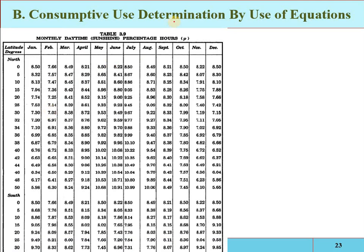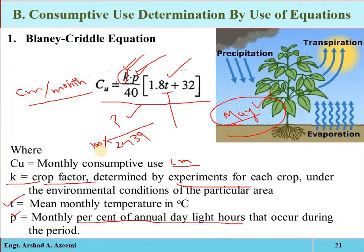The monthly percentage of sunshine hours, P, depends on the locality and latitude of the area. For example, at 40° North latitude for the month of May, P can be taken as 10.02. These values are available in already-tabulated standard tables. So the equation requires only the mean monthly temperature, the monthly percent of sunshine hours, and the K value — only three parameters — to give the monthly consumptive use in centimeters.